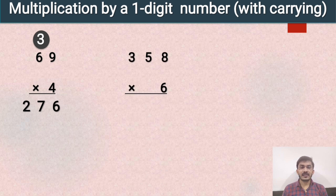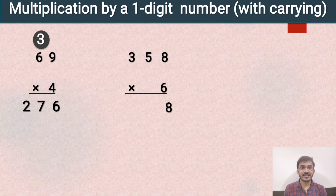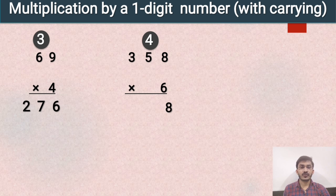In the next example, 358 multiplied by 6. According to the rules, we will multiply 6 with 8. So 6 eights are 48. We write 8 at the ones place. 4 we carry forward to the next digit. Now we will multiply 6 with 5. 6 fives are 30. And we have to add this carry to 30. So 30 plus 4 is equal to 34. We write 4 at the tens place and carry 3 forward to the next digit.